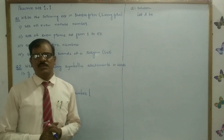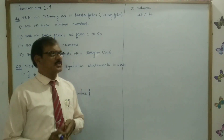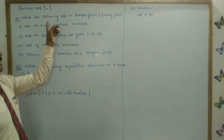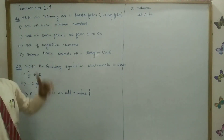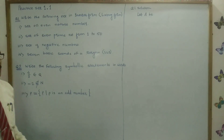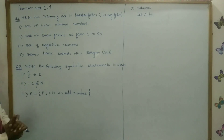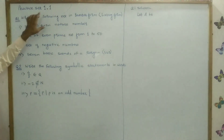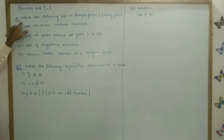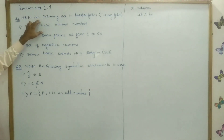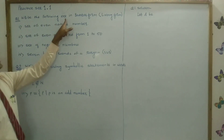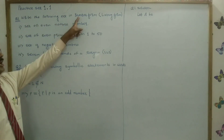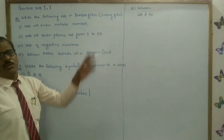Now we start exercise, that is practice set 1.1 in chapter number 1. So here, practice set 1.1, question number 1: write the following set in roster form.